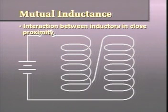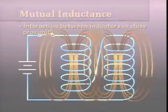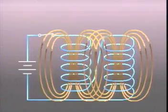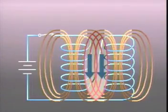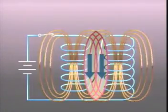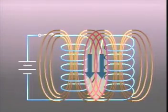Mutual inductance is the interaction between inductors in close proximity. Notice that the windings of these inductors are in the same direction. This makes them series aiding, and their flux lines combine to increase the total flux cutting the windings. This increases the total inductance of the circuit.